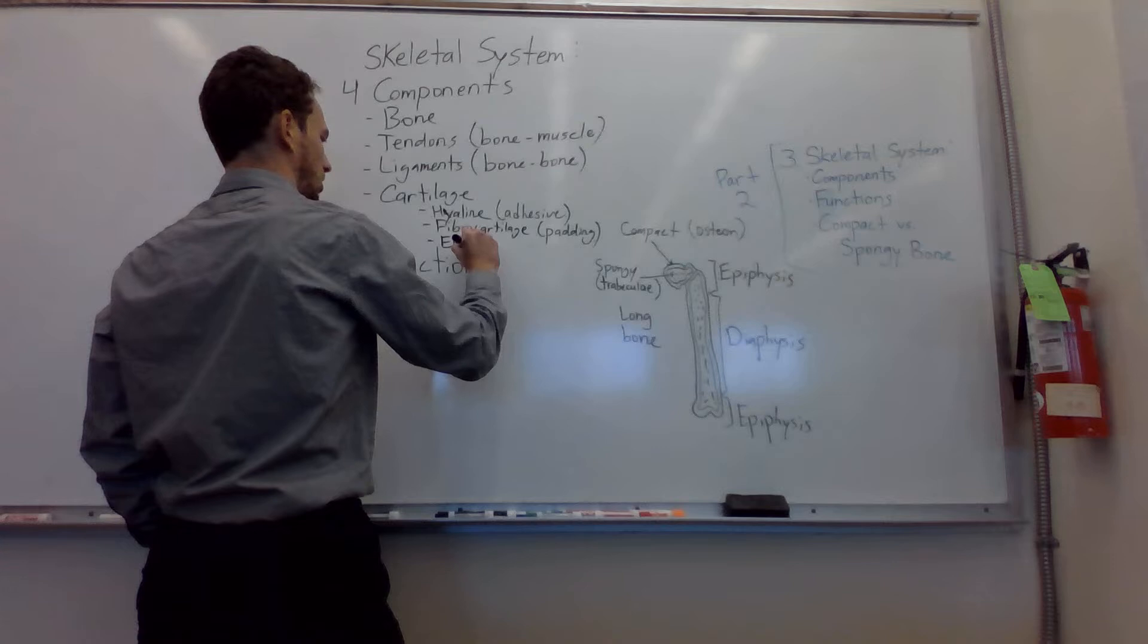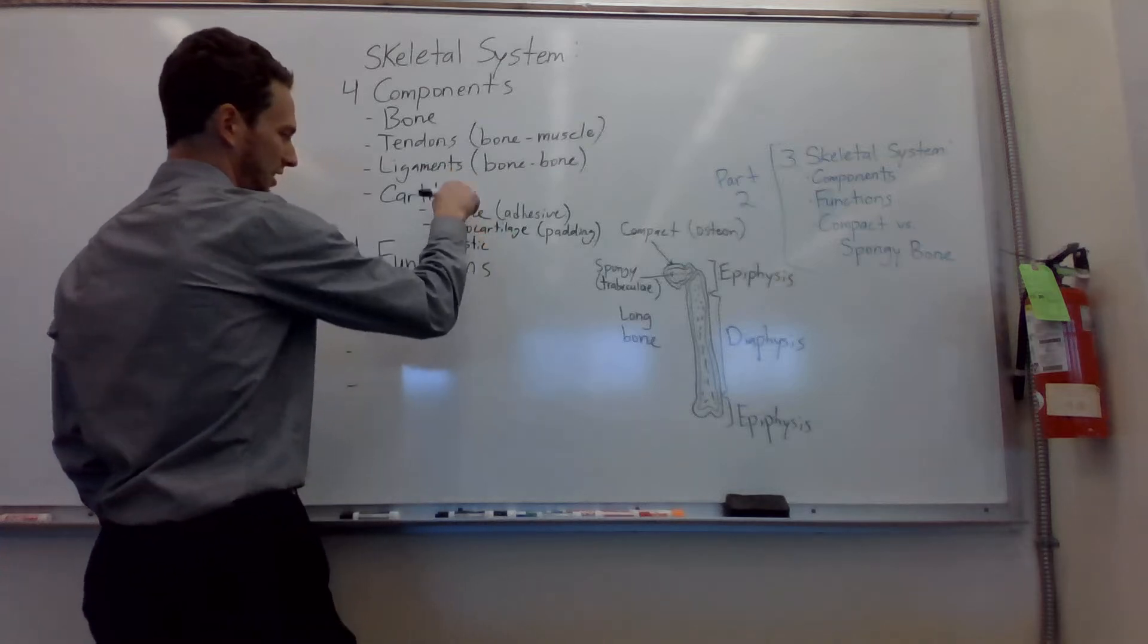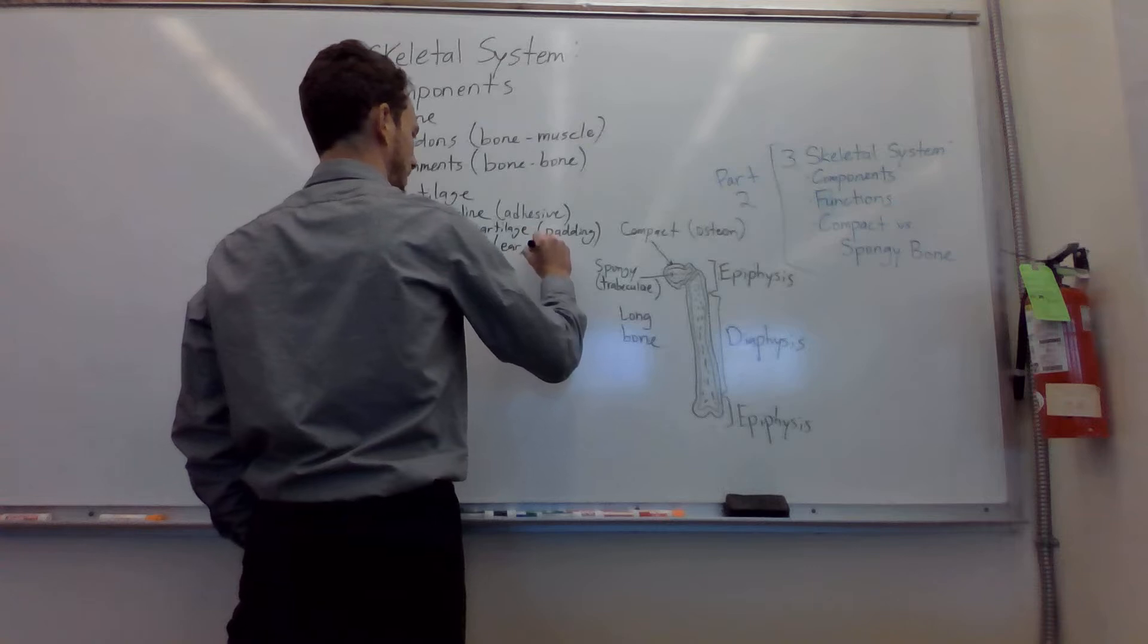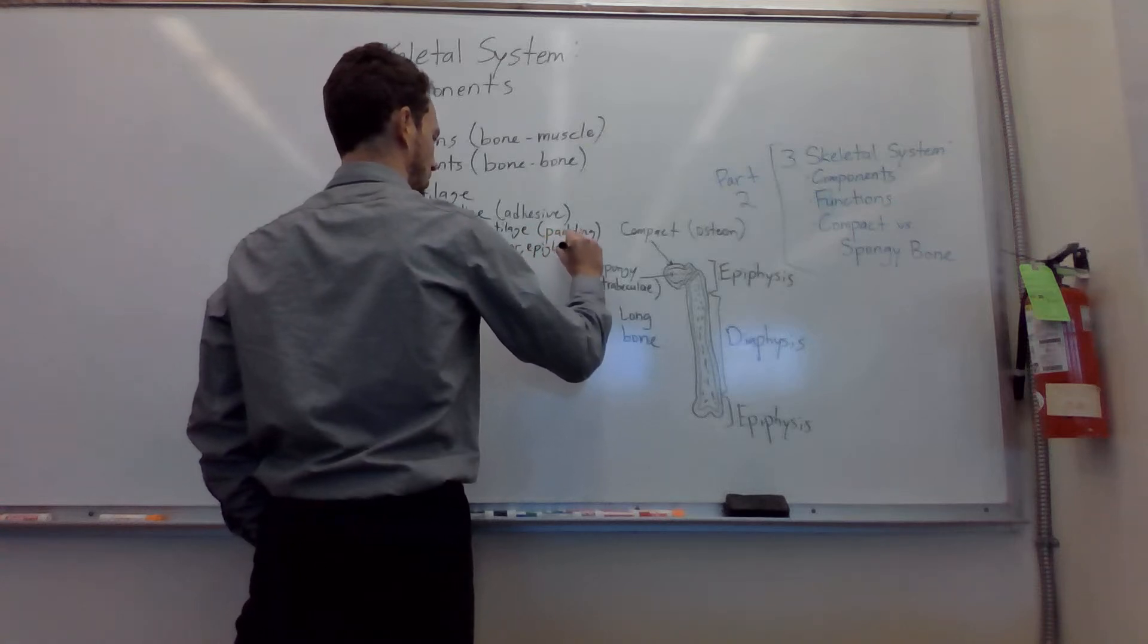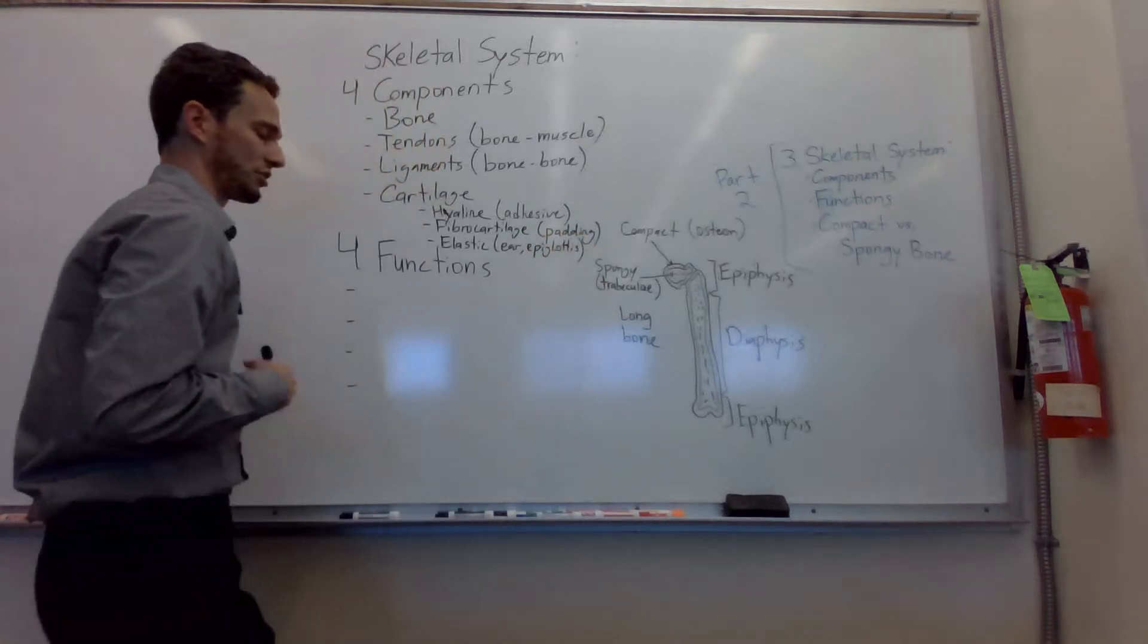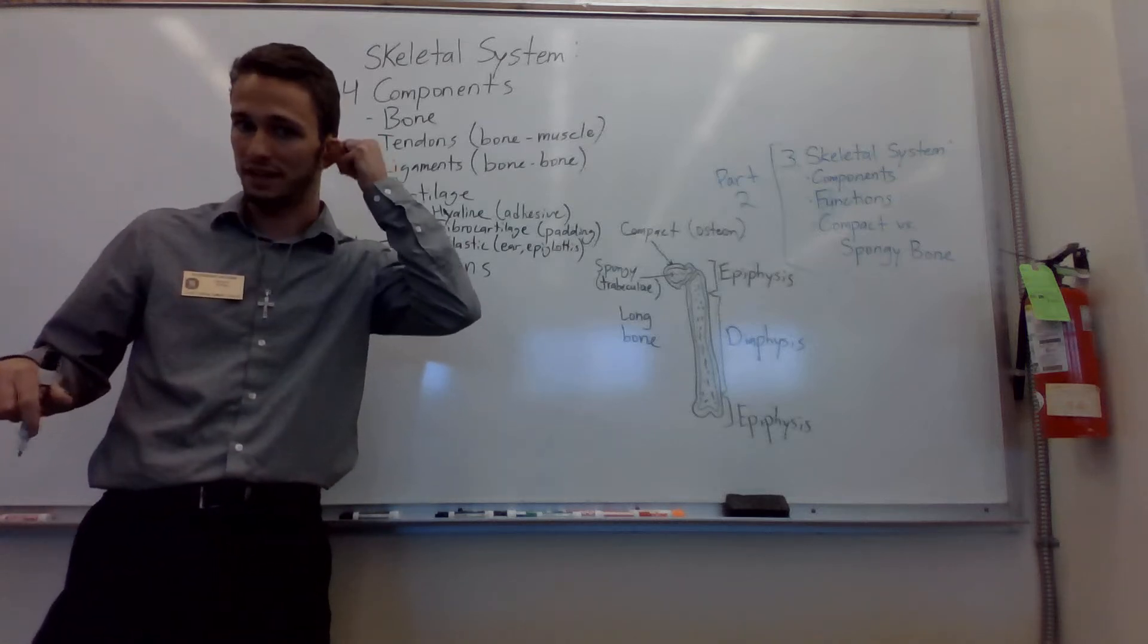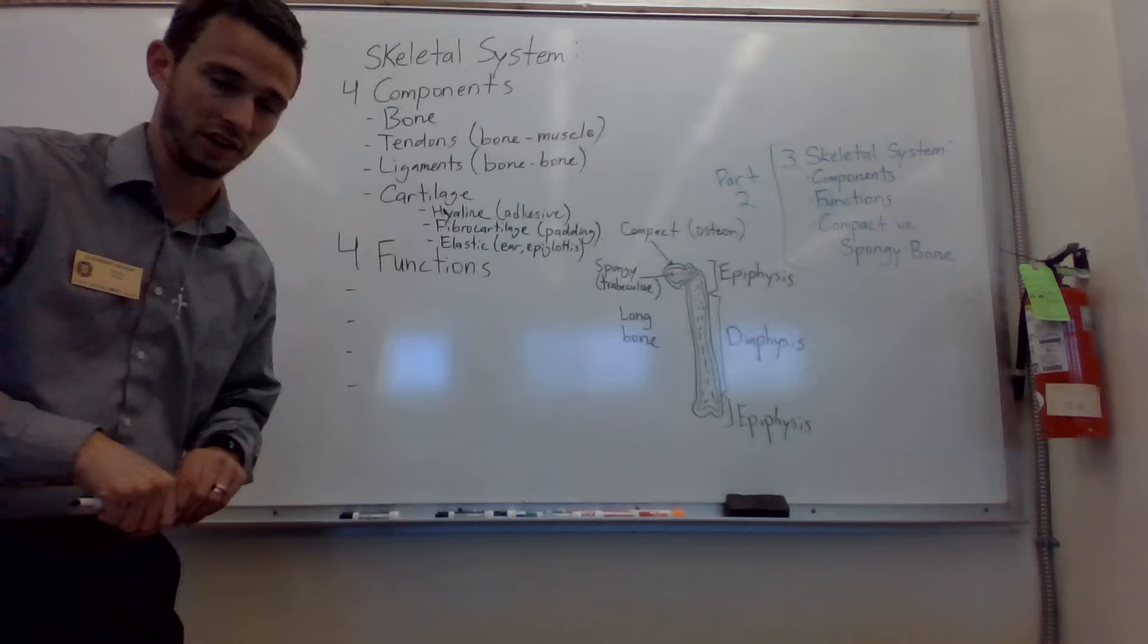And lastly, elastic cartilage, which doesn't fit into either of the categories. And this is found in your ear and your epiglottis. Your epiglottis closes your trachea when you are swallowing and also stays open when you are breathing. And then your ears obviously are bendy as heck. So this is elastic cartilage. It's very flexible.